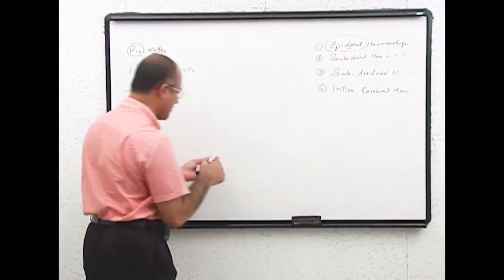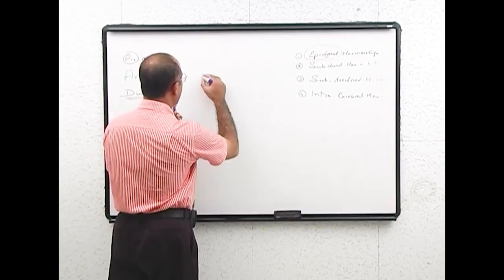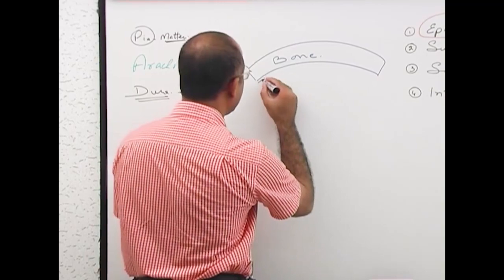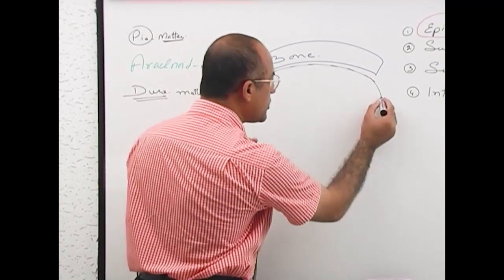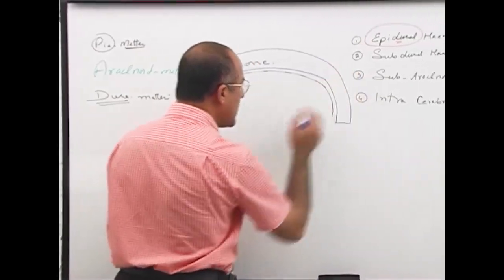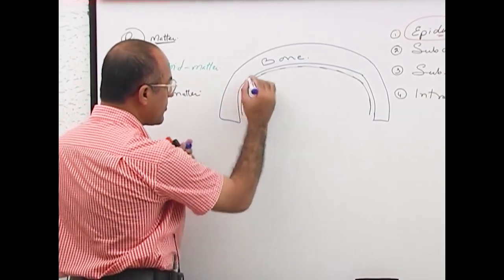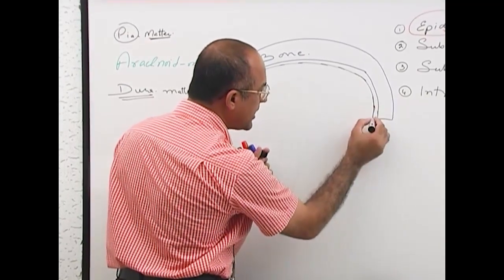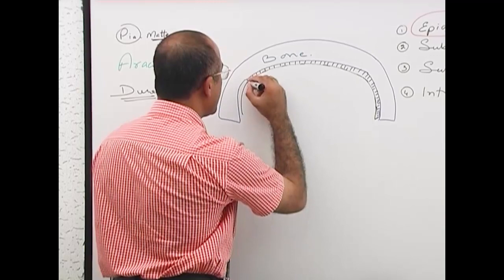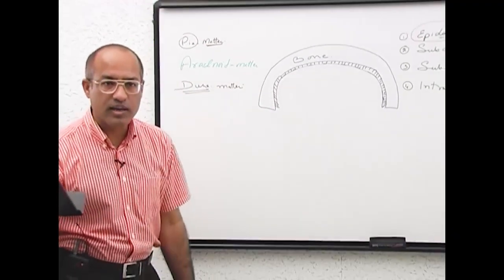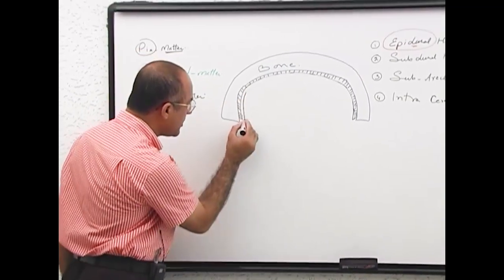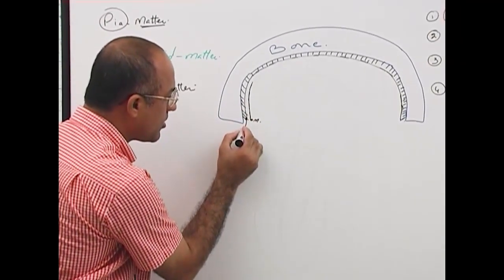Let me draw a simple diagram. This is your skull bone. Here is your dura mater. Dura mater basically has two layers when we talk about its relation to the skull. One layer is very much attached with the bone — this is called the periosteal layer of the dura mater. The second is called the meningeal layer.